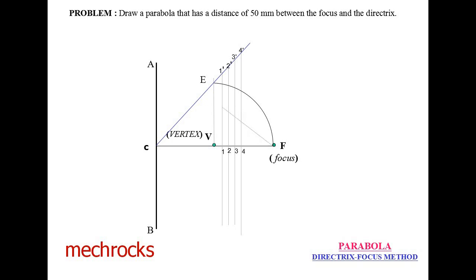Now listen carefully. Take 1 to 1 dash as the radius, with F as center, and cut the 1 to 1 dash line. Name the intersection point above as P1, and below as P2.